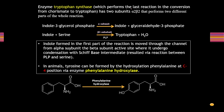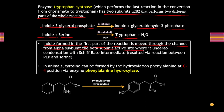Tryptophan synthase, which catalyzes the last reaction, has two subunits. Indole-3-glycerol phosphate is first converted to indole and glycerol-3-phosphate; the indole moves through a channel from the alpha subunit, and the beta subunit catalyzes its condensation with serine via a Schiff base intermediate involving PLP to form tryptophan. In animals, tyrosine can be formed by hydroxylation of phenylalanine at the C4 position by the enzyme phenylalanine hydroxylase.